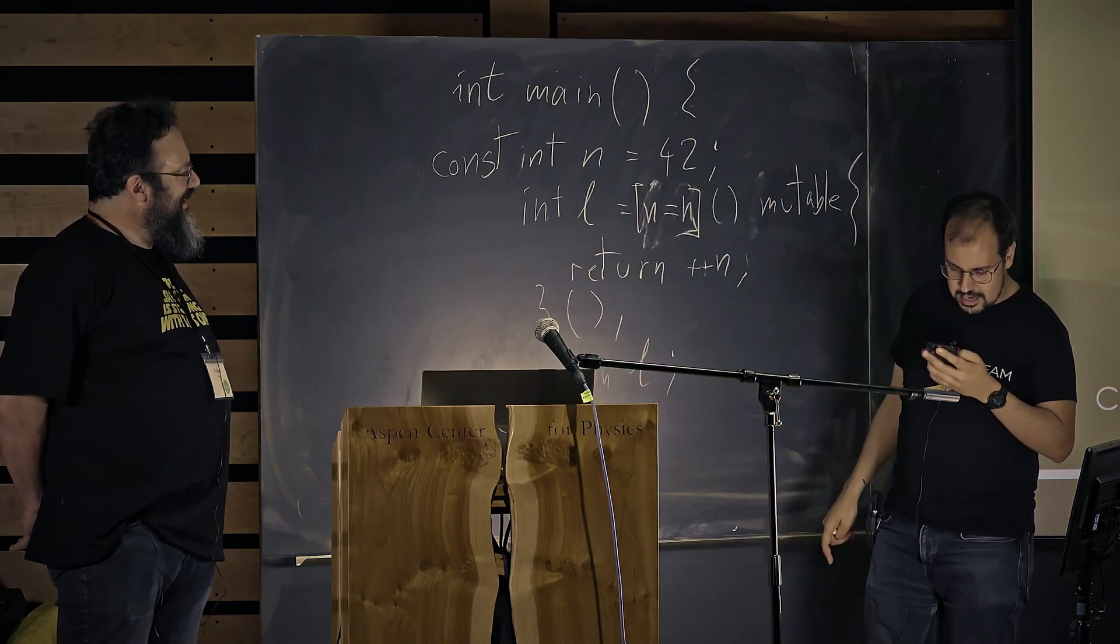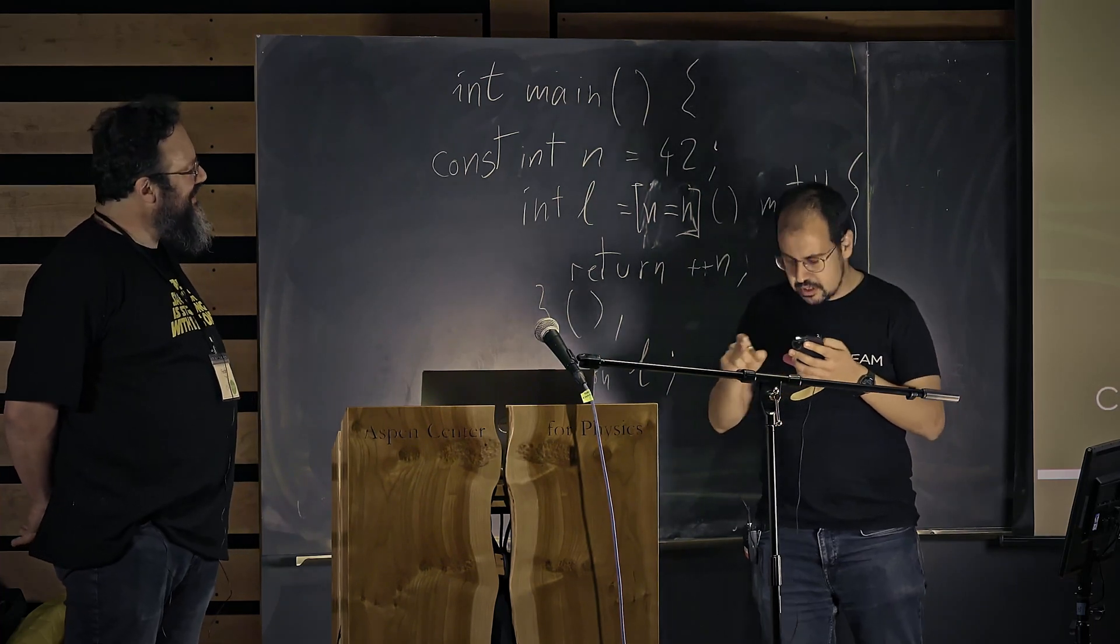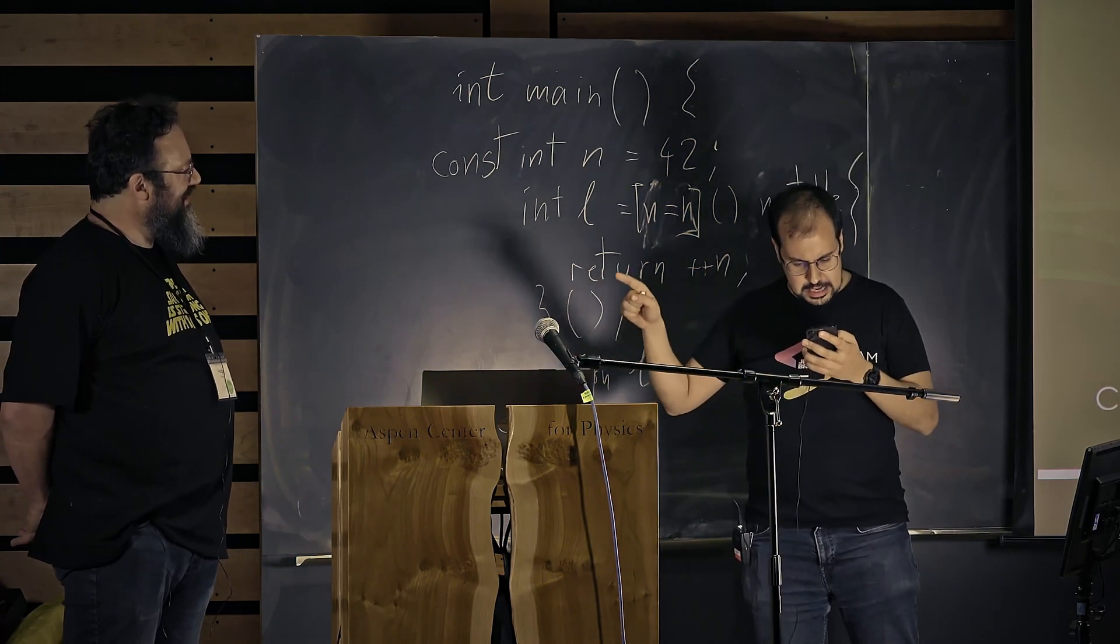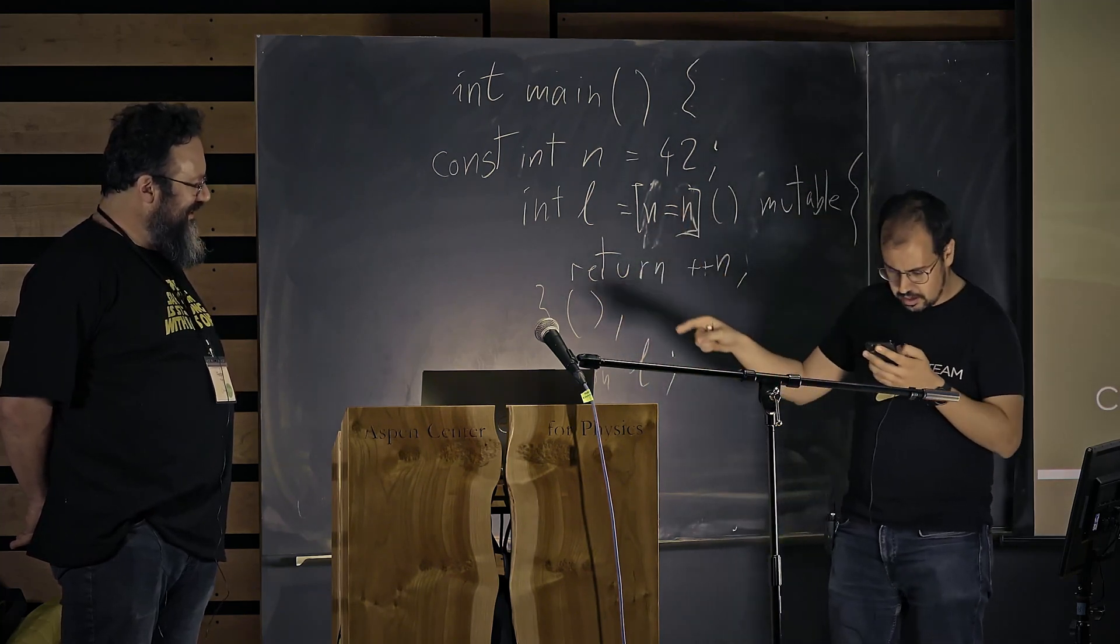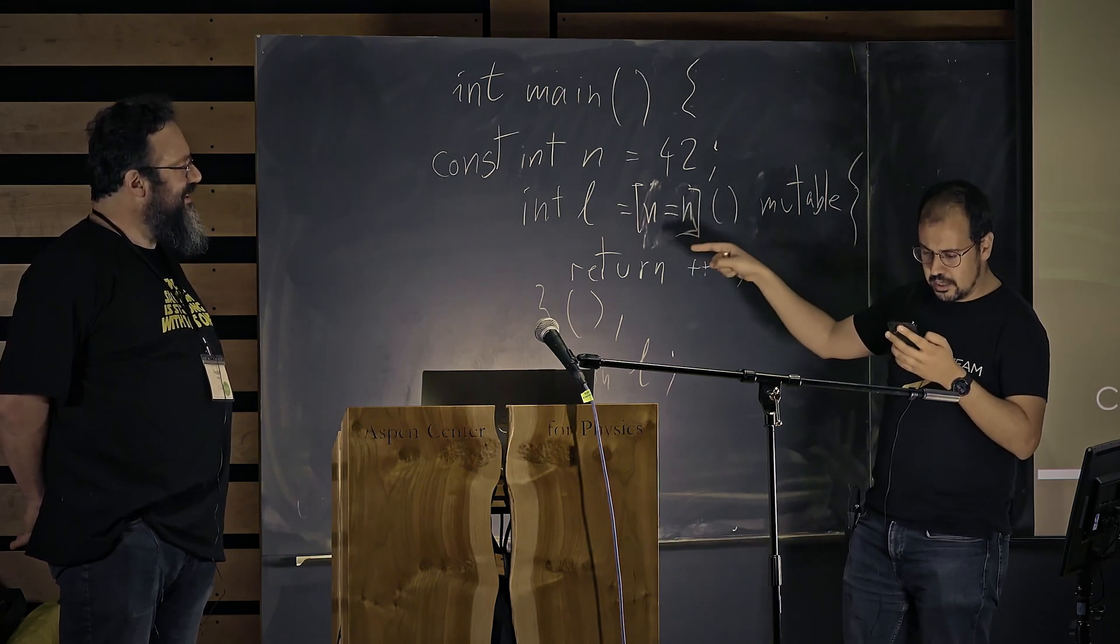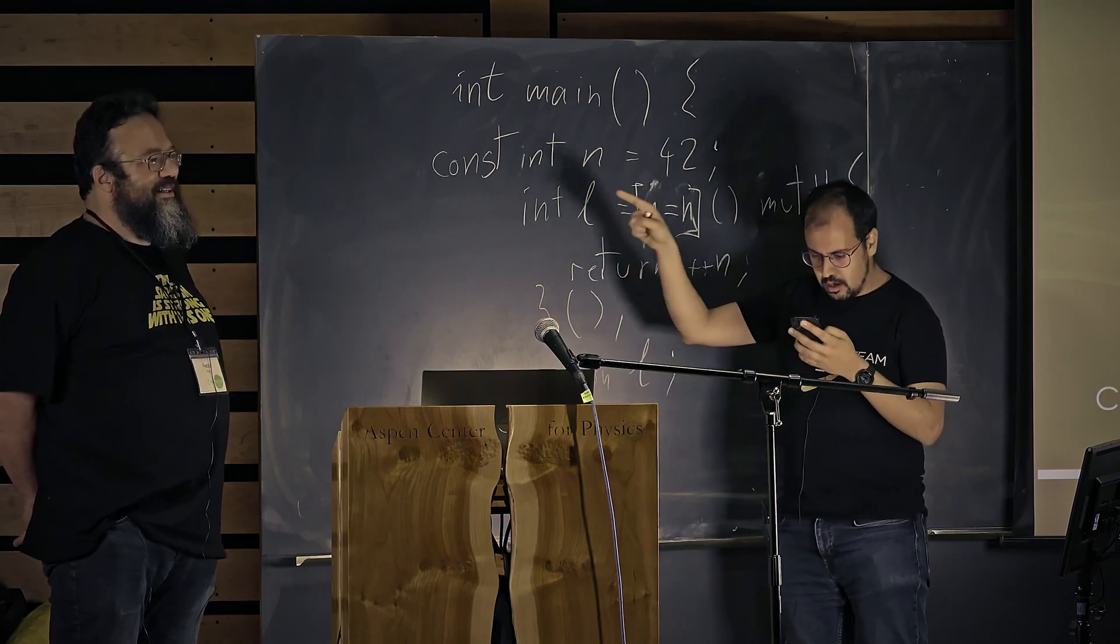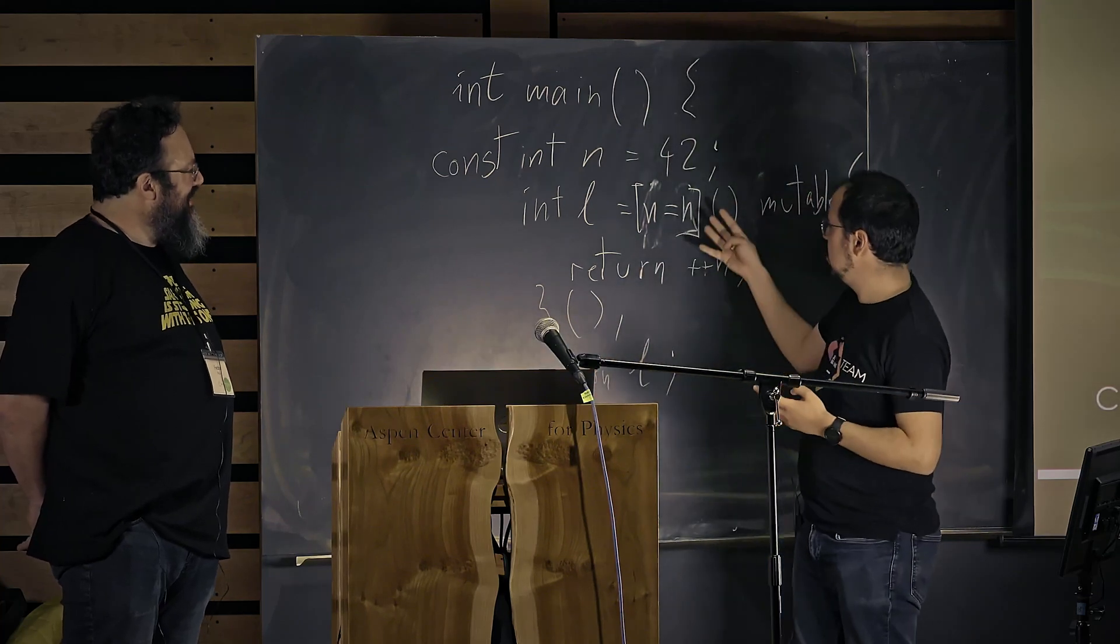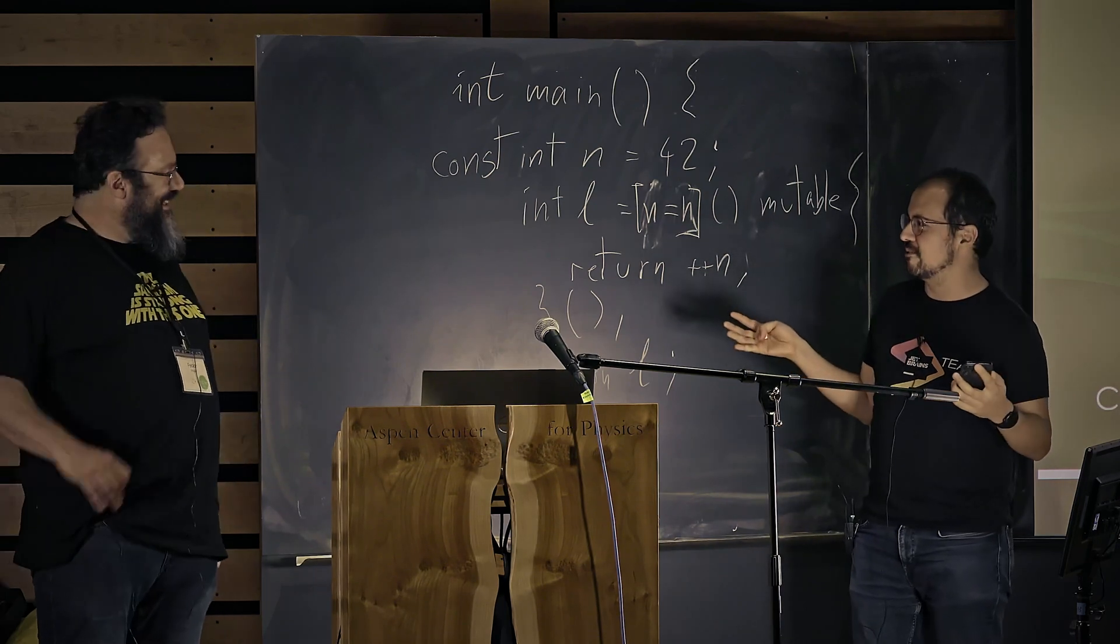But what really breaks my brain is why this works again. So the standard says in paragraph six is that an init capture without ellipses behaves as if it declares and explicitly captures a variable of the form auto init capture semicolon, except that if the capture is by copy, see below the non-static data member declared for the capture and variables are treated as two different ways of referring to the same object, which has the lifetime of the non-static data member and no additional copy instructions performed, which is not what's going on here. So I really don't know what's going on here.